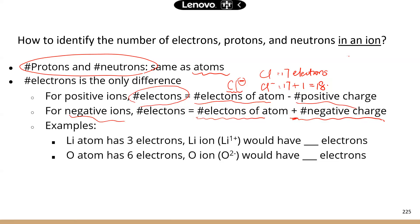When you only see one plus sign or one minus sign, that just means one electron changed. If you see two plus or two minus, that means a change of two electrons. If it's three plus or three minus, that's a change of three electrons.